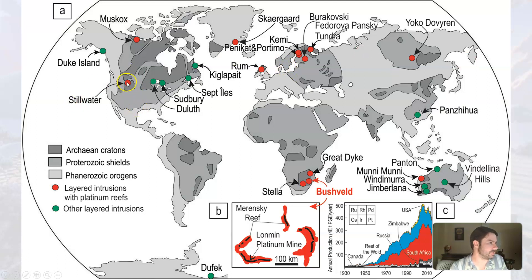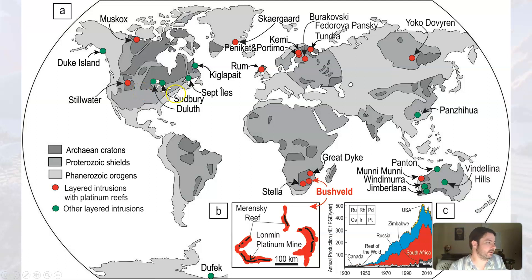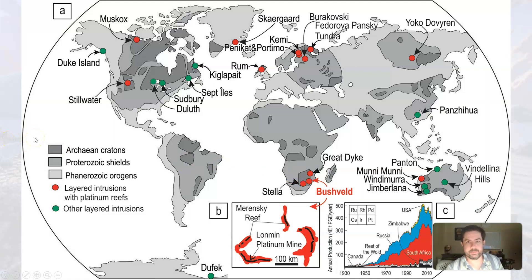Here's the Stillwater deposit. The darker gray areas are Archean cratons, and the medium gray are Proterozoic shields — still part of this Precambrian cratonic event. You can see these layered platinum deposits are most often associated with some sort of cratonic shield type setting.